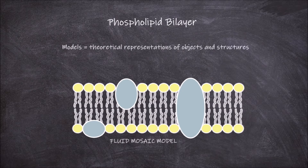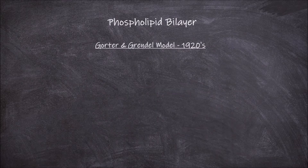Models are theoretical representations of objects and structures. Models are used a lot in science, especially in describing structures that are microscopic, such as the cell membrane. One of the first proposed models of the cell membrane as a bilayer came from research done in the 1920s by Gorter and Grendel.